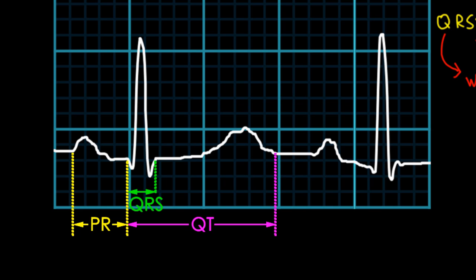Thus, the QT interval more than anything reflects ventricular repolarization, and processes that affect repolarization tend to have the greatest effect on the QT interval. It's important to know that at fast heart rates, the QT interval tends to be shorter, thus permitting a shorter refractory delay before the ventricles can fire again. Similarly, at slow heart rates, the QT interval tends to be longer.